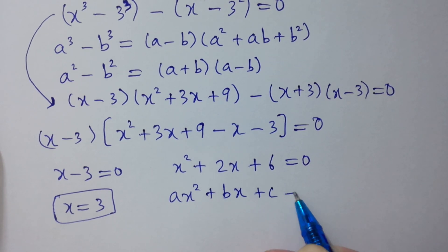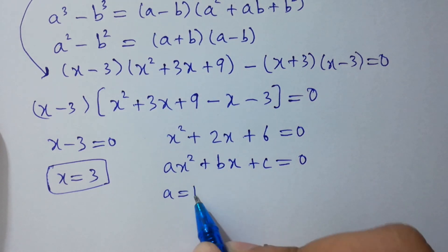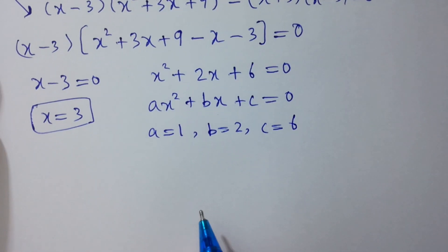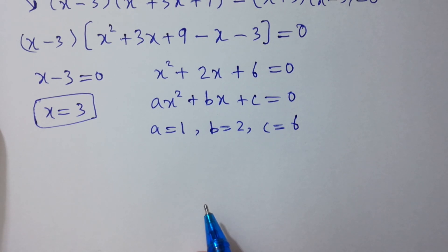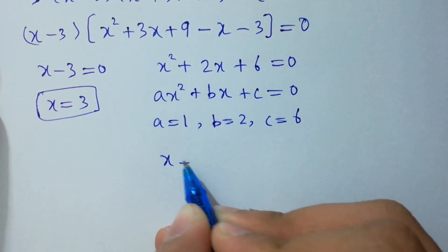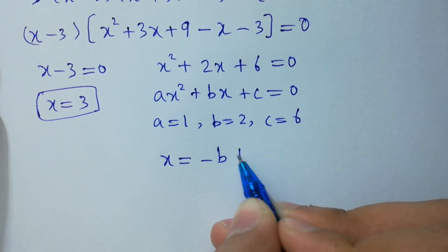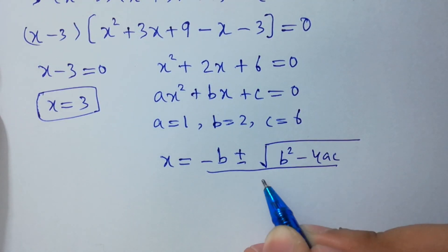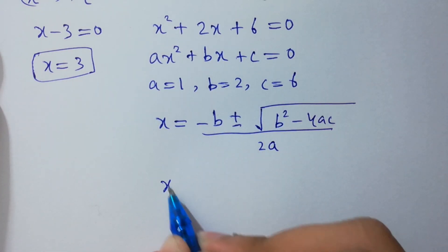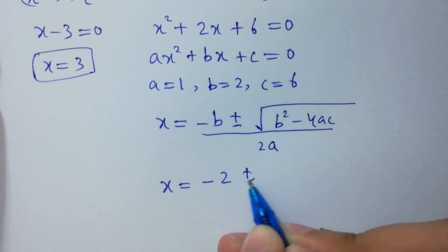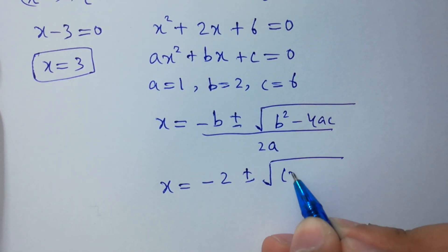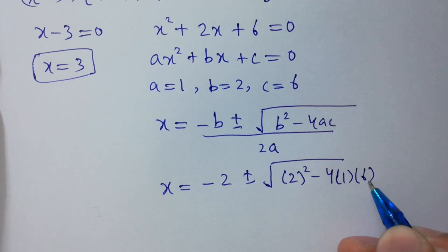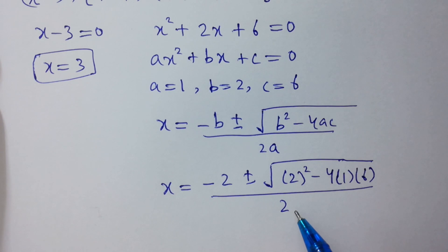The quadratic equation is ax squared plus bx plus c equals 0. By comparing: a equals 1, b equals 2, c equals 6. Applying the quadratic formula: x equals minus b plus or minus square root of b squared minus 4ac, over 2a. So x equals minus 2 plus or minus square root of 2 squared minus 4 times 1 times 6, over 2 times 1.